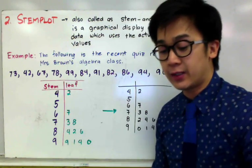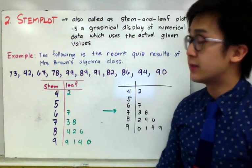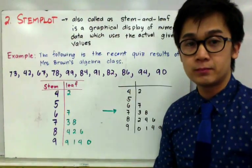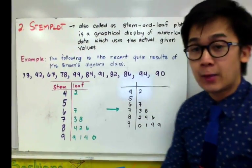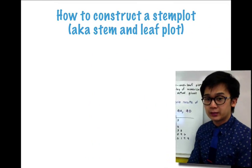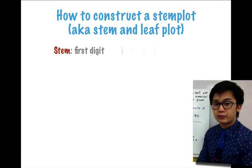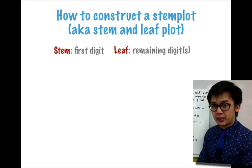Once again, stem plot is also known as the stem and leaf plot, wherein the stem will be the first digit, and our leaf will be the remaining digits.